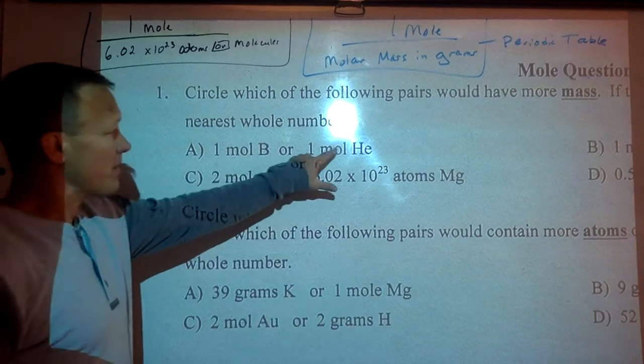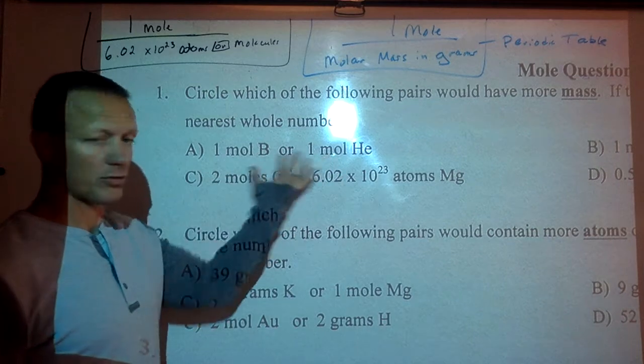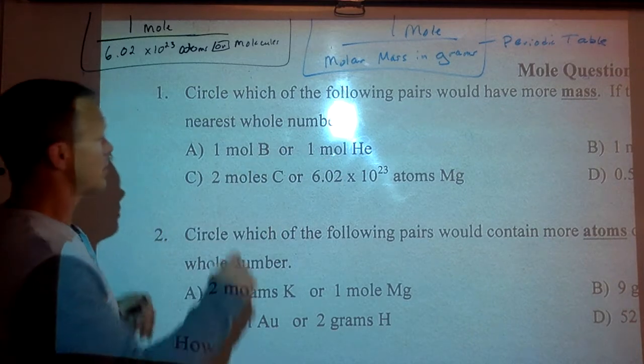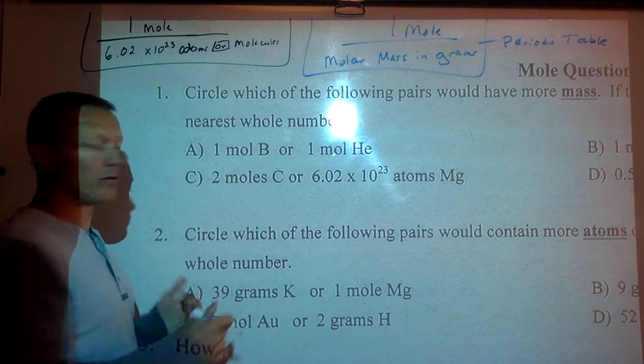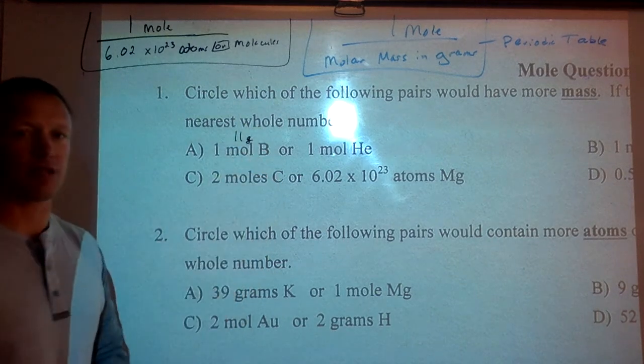So if I'm doing that, these are equal in terms of number of particles. They're both Avogadro's number of particles. They're both a mole of particles. But a mole of boron, if you look at the periodic table, is 10.8 grams. We'll just round that to 11 grams. So that would have a mass of 11 grams.